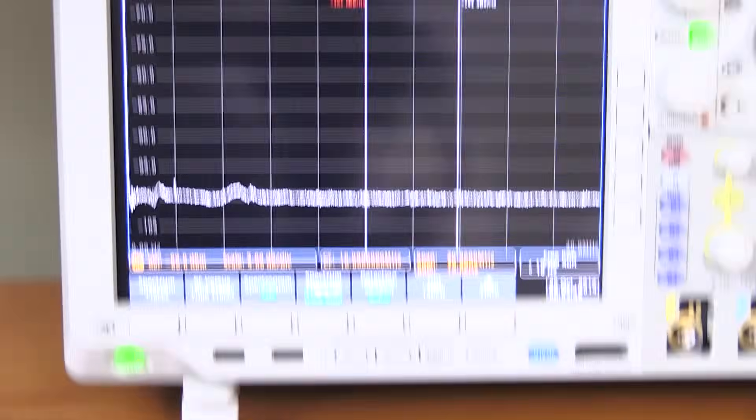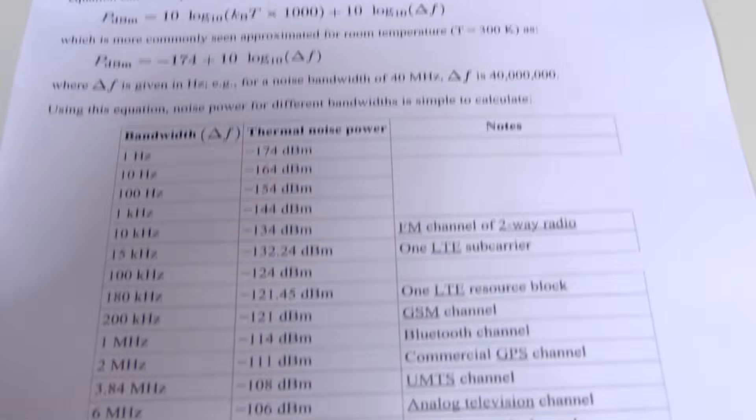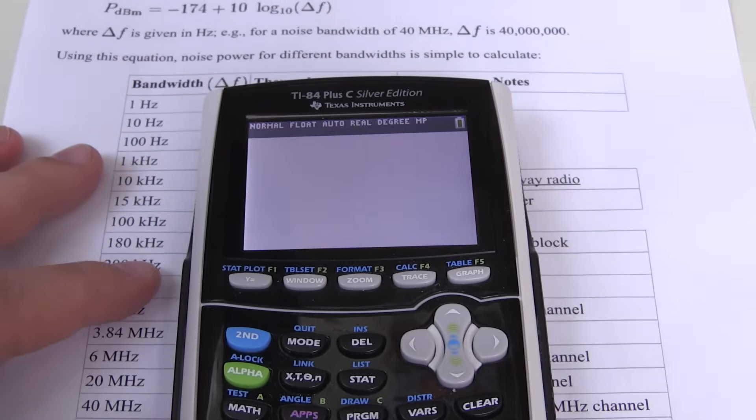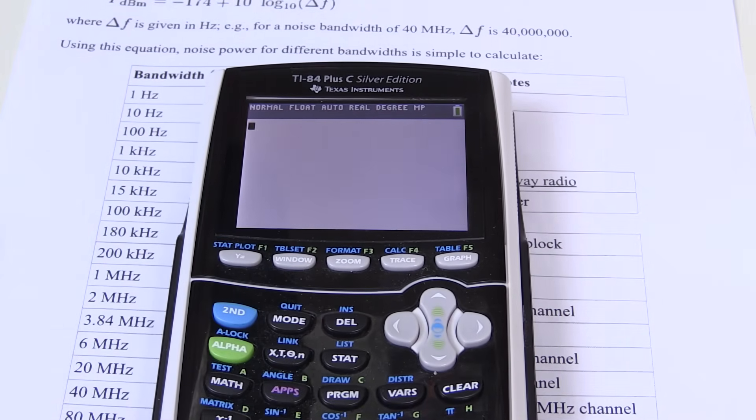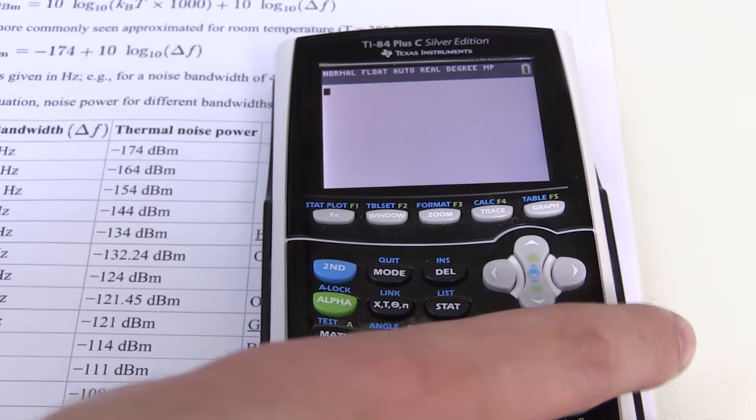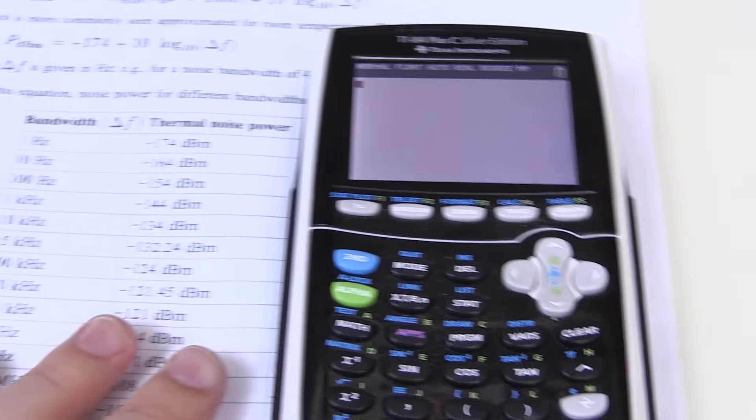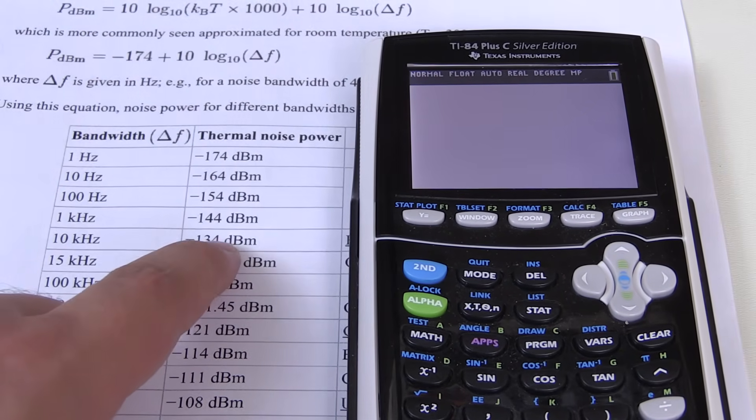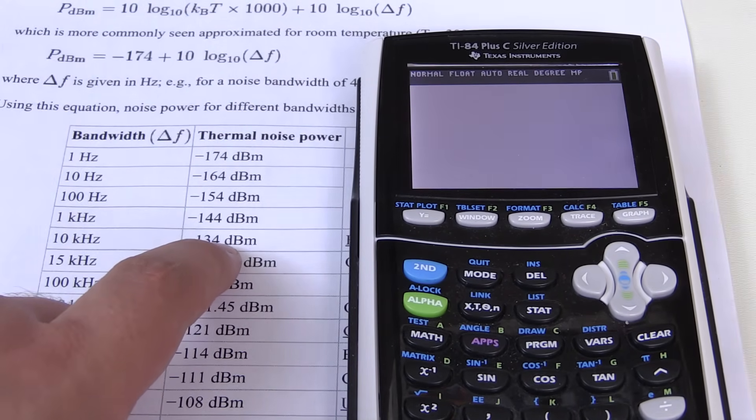Let's see. We'll need a calculator. Here it is. So the first thing we're going to look at is our 10 kilohertz bandwidth. And if I move this table here for a little bit, you can't see that. Now you can. 10 kilohertz, we expect a thermal noise power of negative 134 dBm.